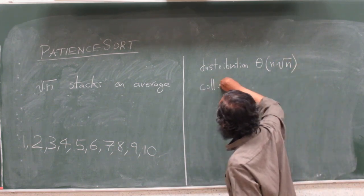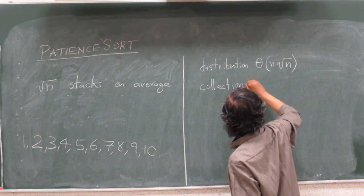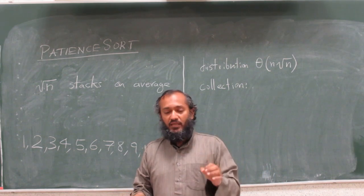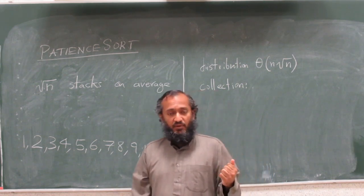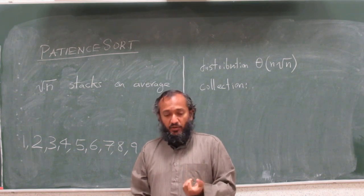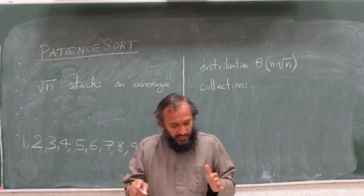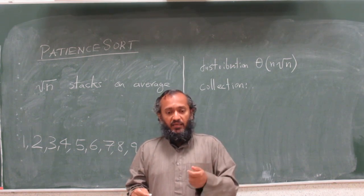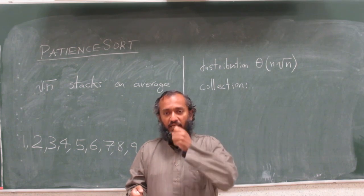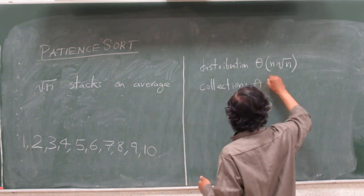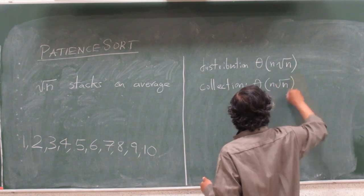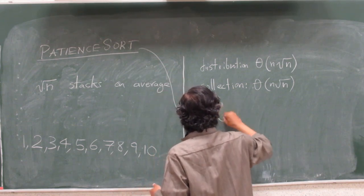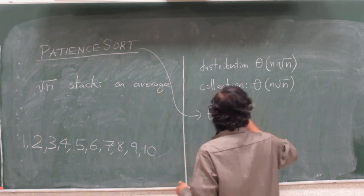And then the collection. You scan roughly the square root of n stacks for the min. Finding minimum of a set of numbers is linear in the number of numbers. So the square root of n numbers that you see at any given time, finding minimum of that is square root of n performance, and you have to do square root of n performance for every time you collect a number. So the collection is also theta of n square root of n, and so overall this guy is theta of n square root of n. This is on average.